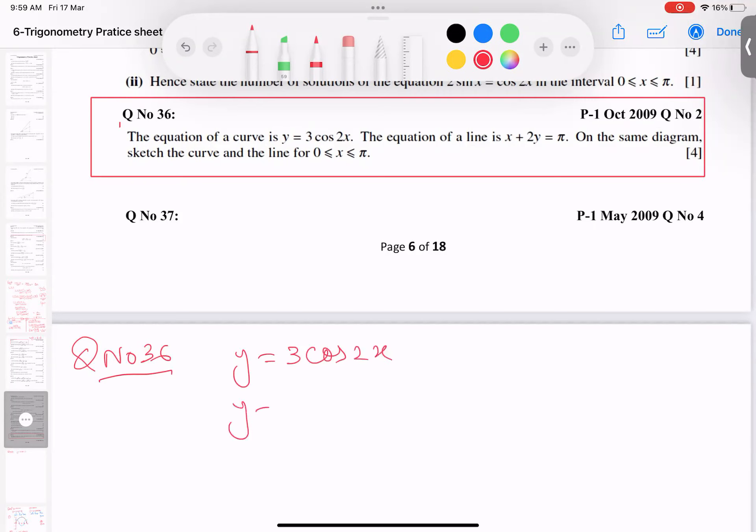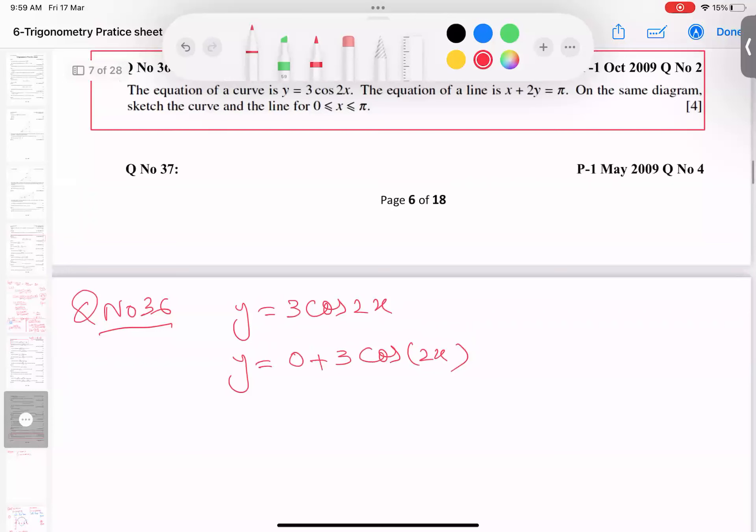And you know it very well, we will always, for sake of understanding, write it in this format. The thing multiplying the cosine element is called amplitude. And the element adding or subtracting is called axis. And this number is called number of cycles, NOC.